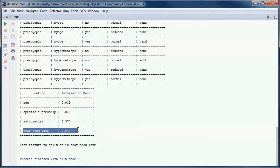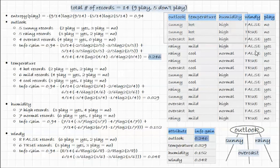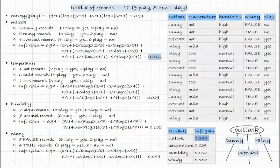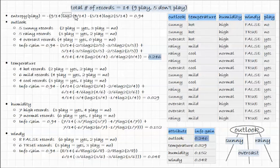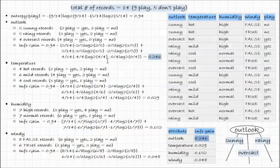Here we have 14 records; of those, 9 are play=yes and 5 are play=no. We apply the entropy formula to calculate the entropy of the entire dataset: minus 9/14 * log base 2 of 9/14, minus 5/14 * log base 2 of 5/14, which gives us this number. We want to calculate the information gain of each attribute to check whether to split on it.